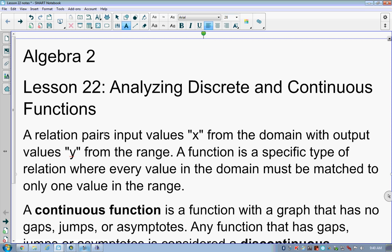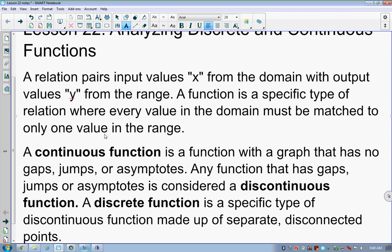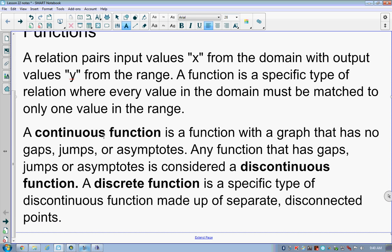A continuous function is a function with a graph that has no gaps, has no jumps, has no asymptotes. Asymptotes are effectively where the graph shoots straight up or straight to the side, and it reaches an extreme. It reaches a vertical or horizontal line. That's our asymptote.